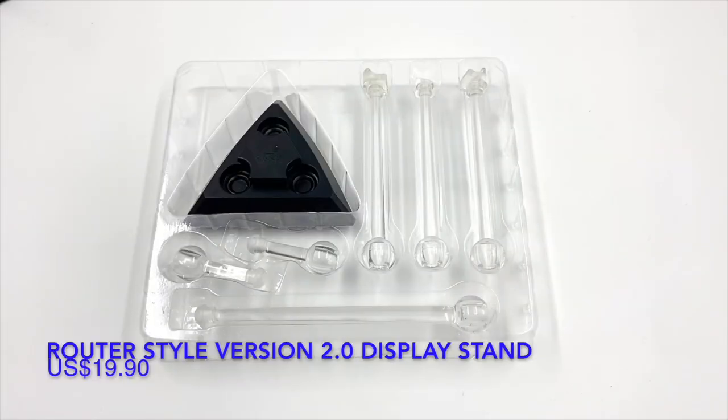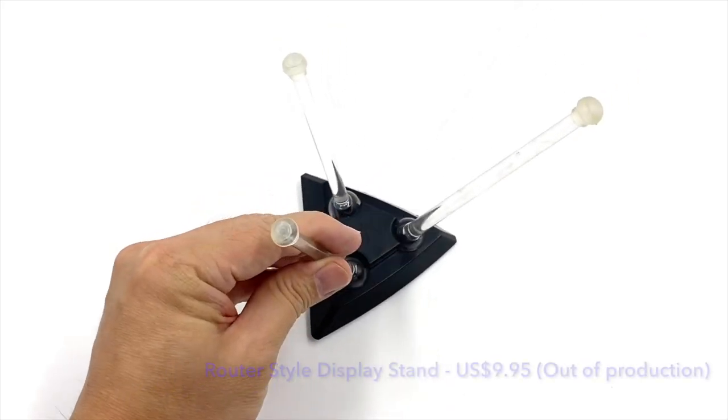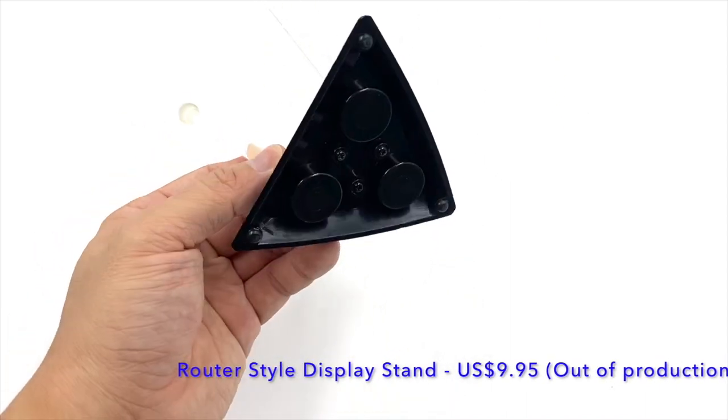Welcome to the router style version 2 display stand. Now let's look at the first version and see how it compares with the second version. In the first version, the stand is basically all plastic.